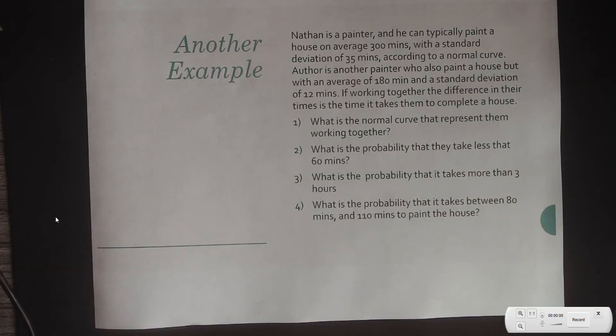Nathan is a painter, and he can typically paint a house on average 300 minutes with a standard deviation of 35 minutes, according to our normal curve. Author is another painter who also paints a house, but with an average of 180 minutes and a standard deviation of 12 minutes. If working together, the difference in their times is the time it takes them to complete a house. So, what is the normal curve in this situation again? We're talking about a difference. So, this time, we're going to subtract.